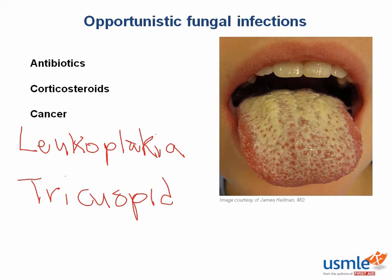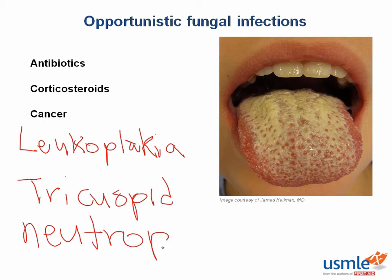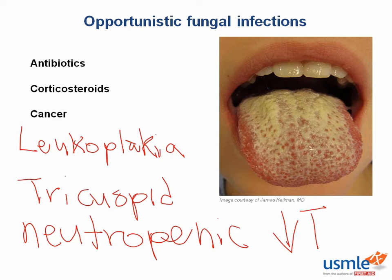Associate Candida with cottage cheese discharge. More serious candidal infections can include disseminated candidiasis to other organs, which usually occurs in neutropenic patients. If you don't have neutrophils, you're neutropenic, and neutropenia is going to lead to mucocutaneous candidiasis. Chronic mucocutaneous candidiasis is characterized by chronic candidal infections of mucocutaneous surfaces such as the skin and nails, and is seen in patients with T cell immunodeficiencies.